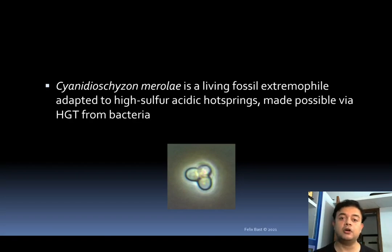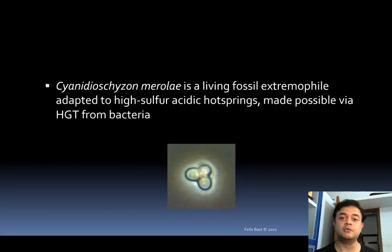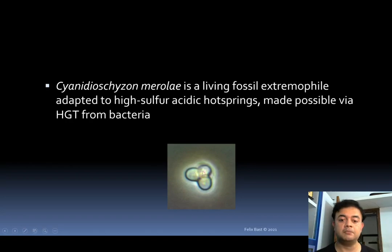This particular red alga got its ability to survive in such an extreme environment because of horizontal gene transfer from bacteria — specifically purple sulfur bacteria. That is what a new study says. This glob-shaped structure is how this alga looks.